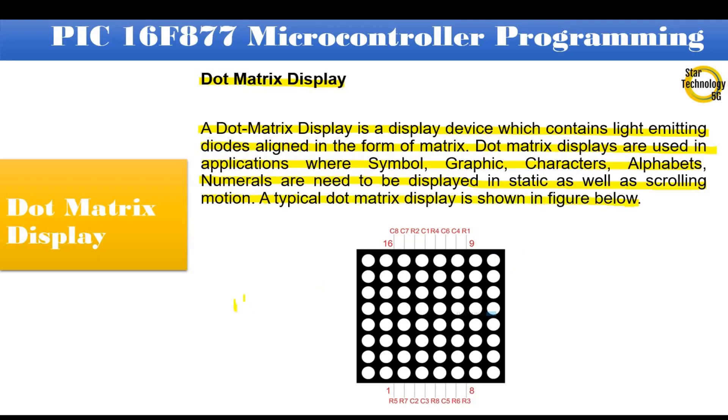It is an 8x8 dot matrix display, means it has 8 LEDs in row and 8 LEDs in column. Here is the connection of the LEDs. R means row and C means column. A typical single color dot matrix unit will have 16 pins, 8 for each row and 8 for each column.